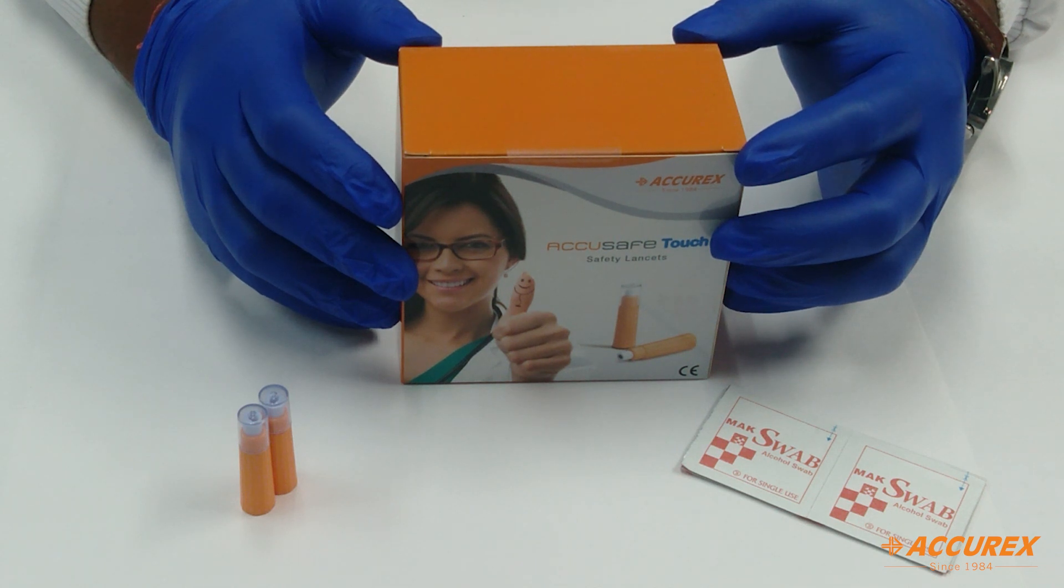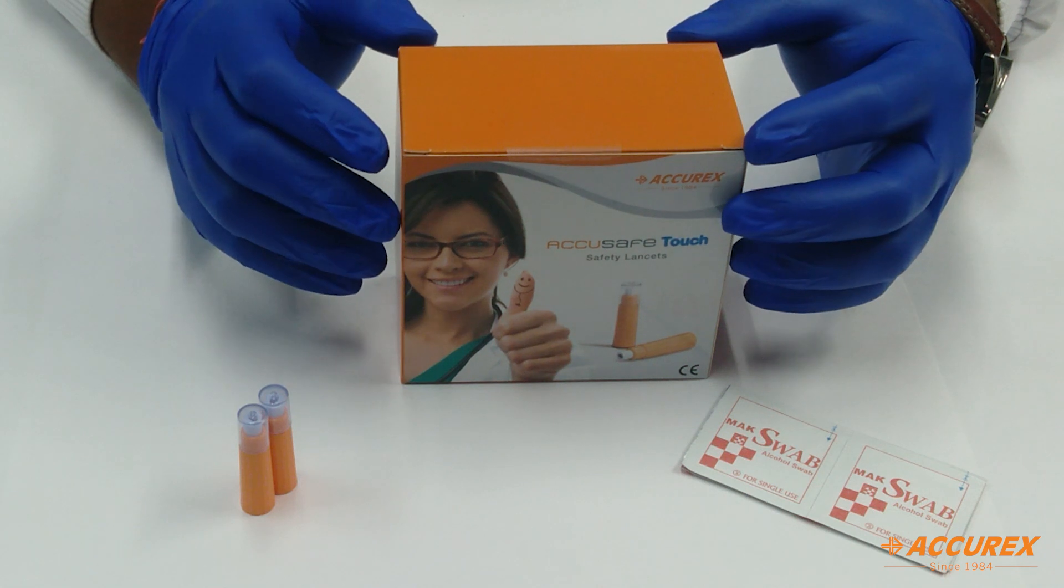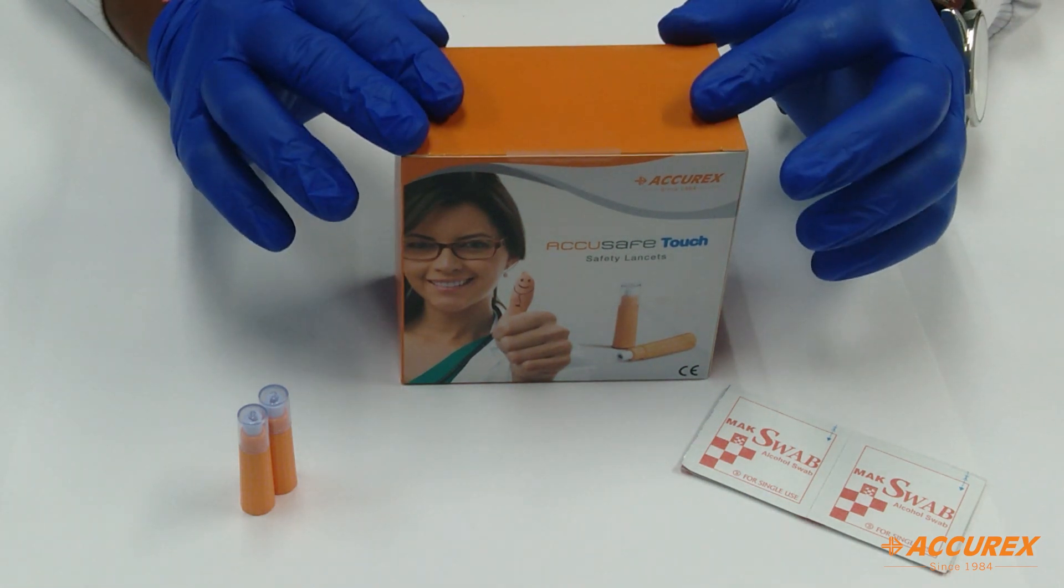You can say glucose, HB1C or uric acid testing, wherever the small pricking is done. This lancet is useful for the same.